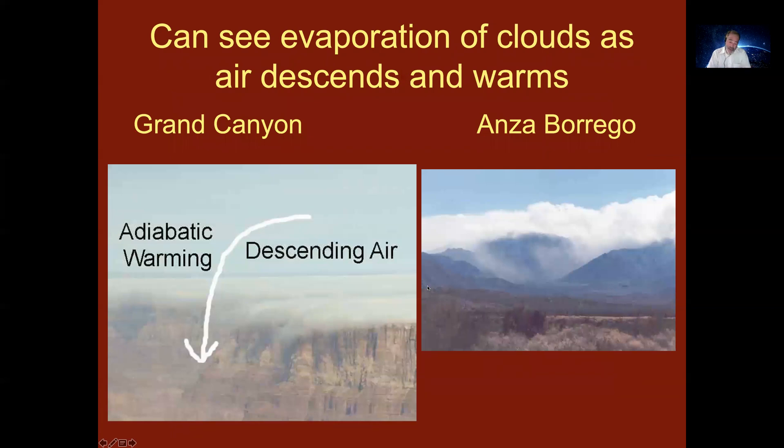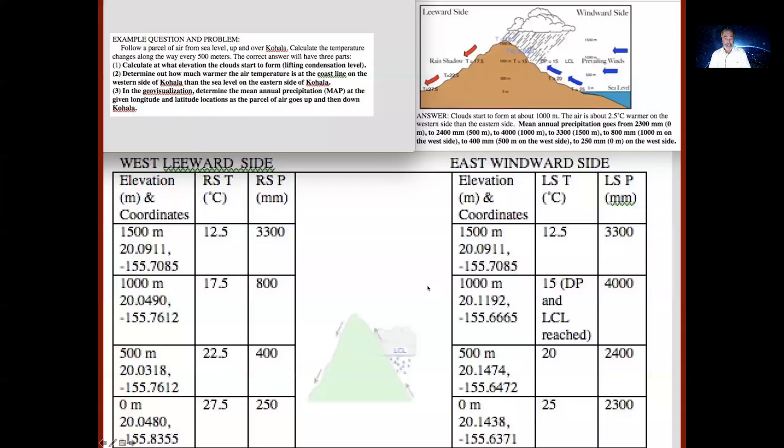So always the relative humidity decreases and the air dries up when you go down the lee side. Here are some scenes where in the Grand Canyon you can see clouds evaporating as it descends and warms. And another one is a rain shadow effect in California where you can see the clouds evaporate as they warm going down.